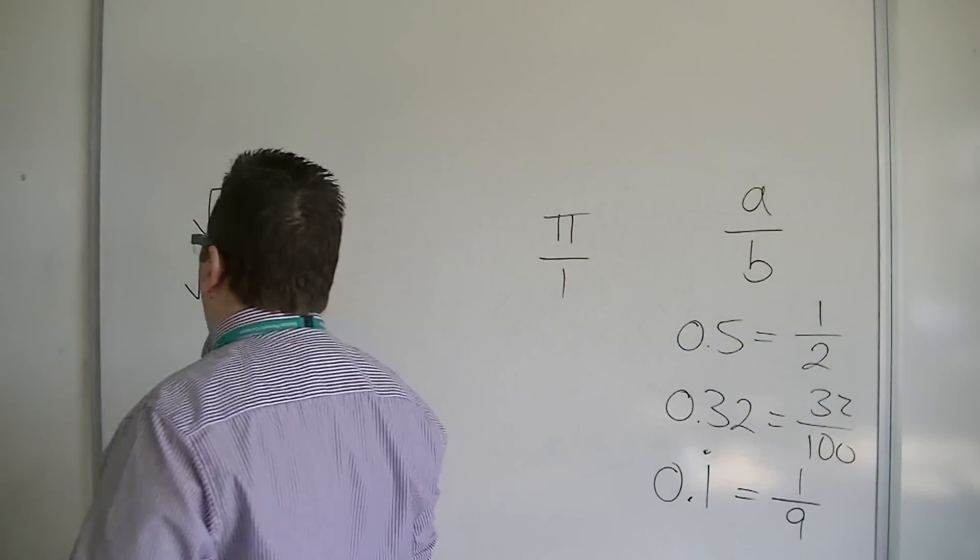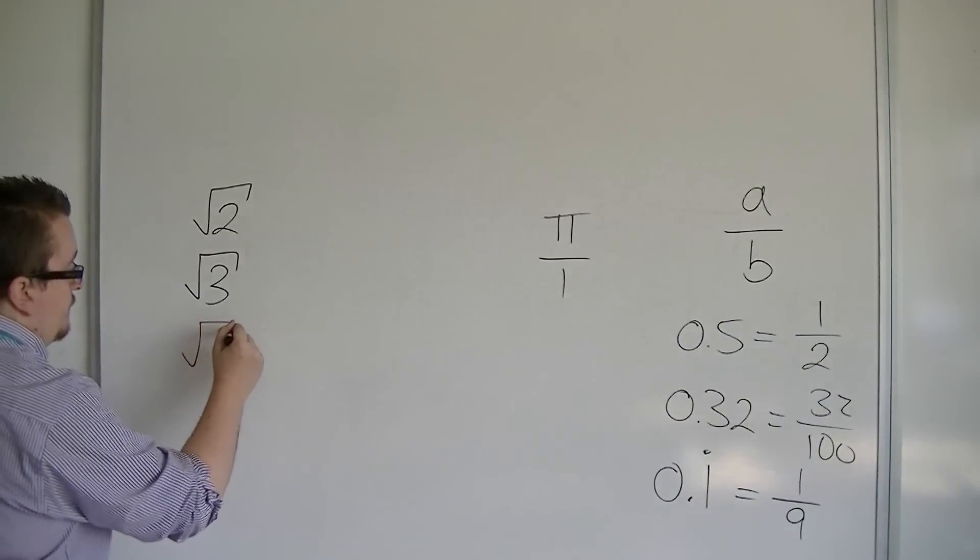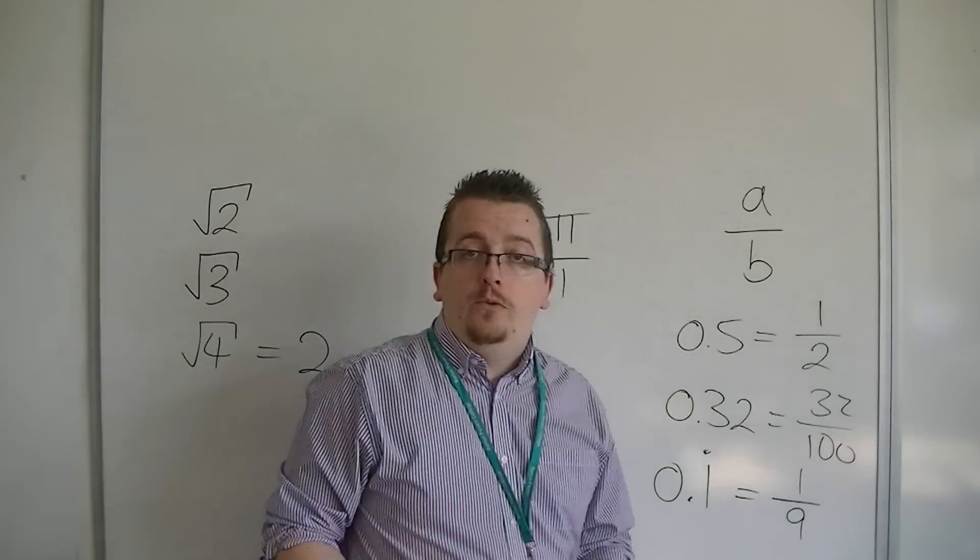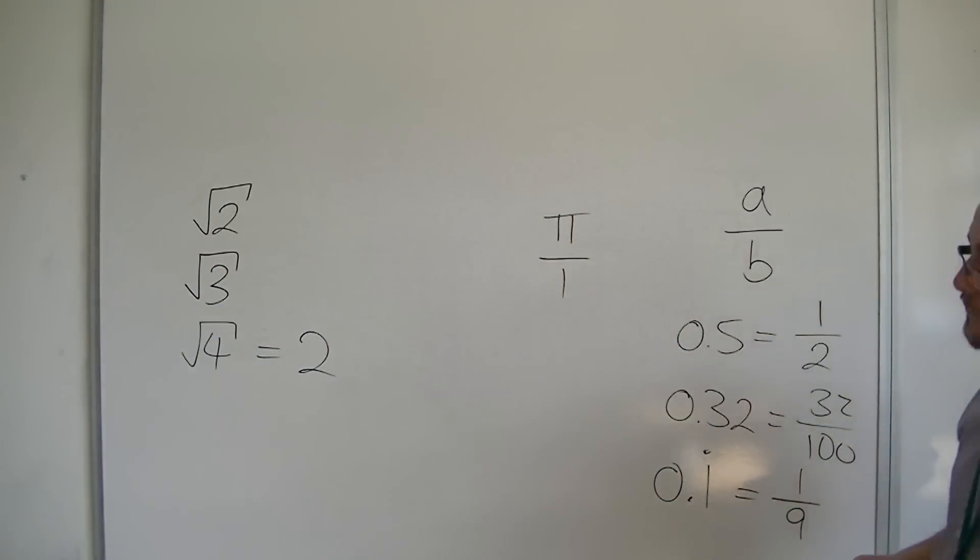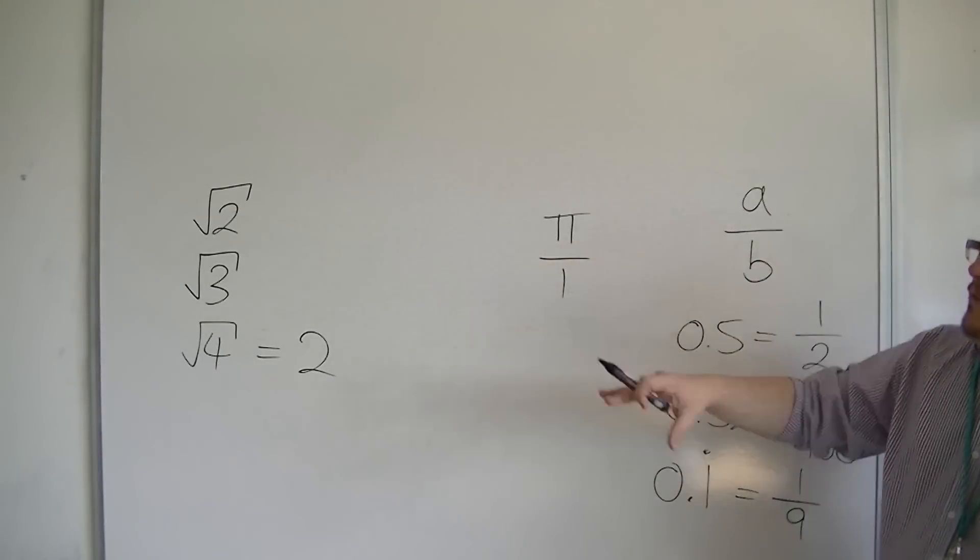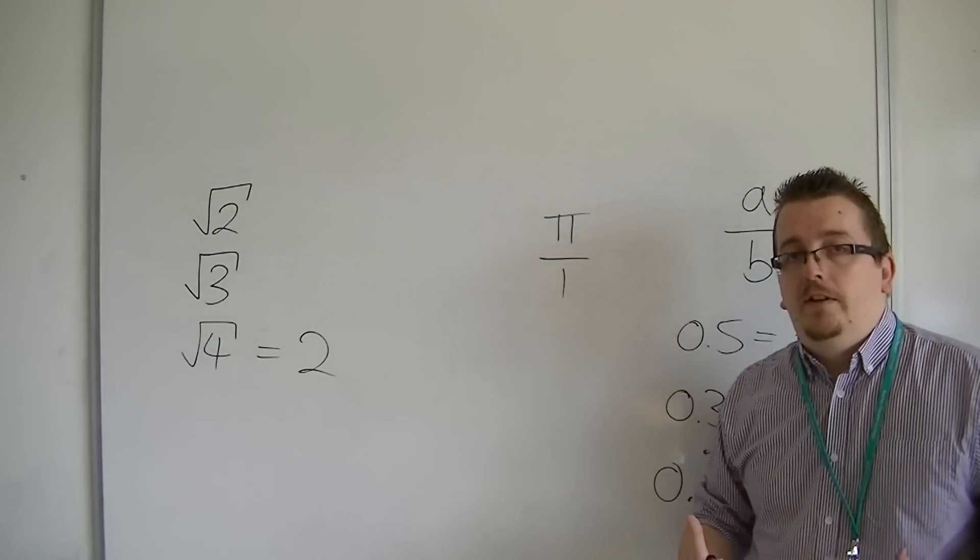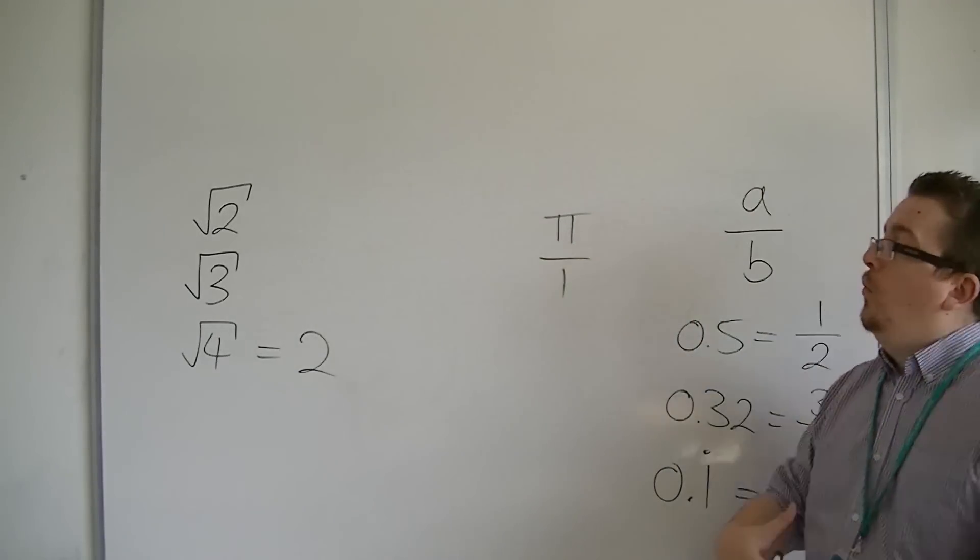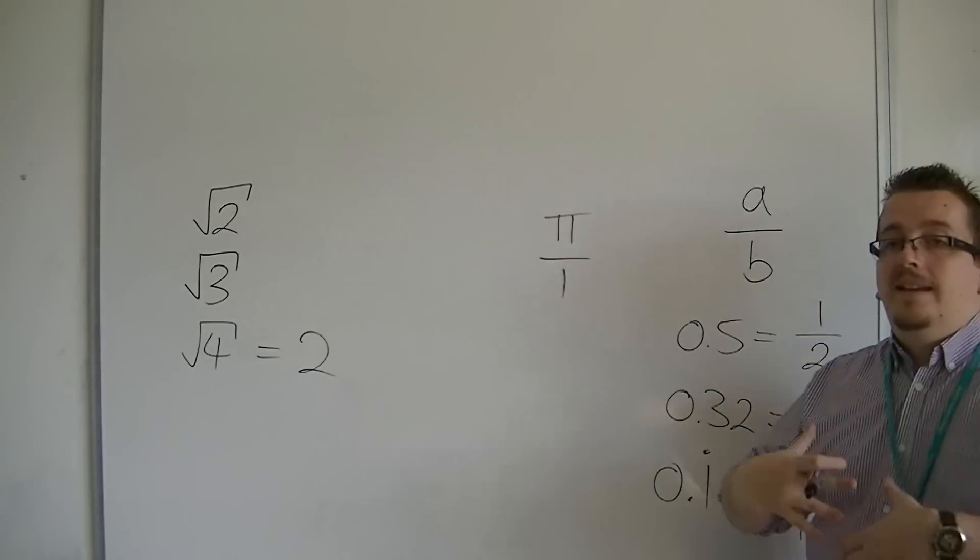The square root of 4, on the other hand, can be simplified. Because we know the square root of 4 is 2. The positive square root, anyway. So, the square root of 4 isn't a surd in the sense that it can be simplified, while root 2 and root 3 cannot.